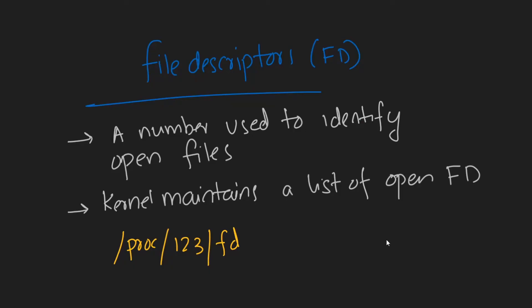File descriptors are a way by which the kernel identifies open files. Basically, whenever any program opens a file, there is a file descriptor pointing to that file. The kernel keeps a list of all open files — it's just a positive integer used to identify open files.